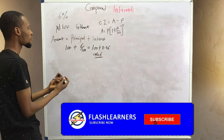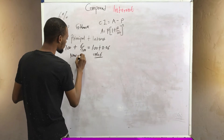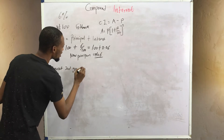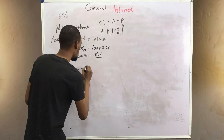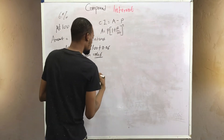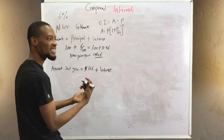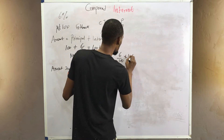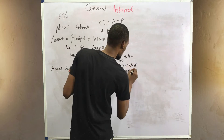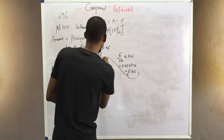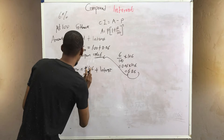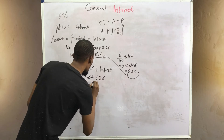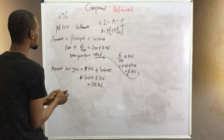So 106 is the amount for the first year and this becomes the new principal. The new principal is 106 plus interest on the new principal. The interest on 106 is six over 100 times 106, which gives you 0.06 times 106 — that's 6.36. So 106 plus 6.36 gives you 112.36, which is your amount at the end of the second year.